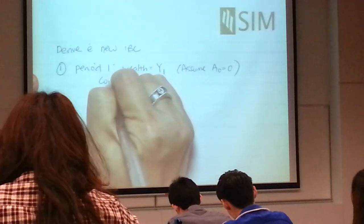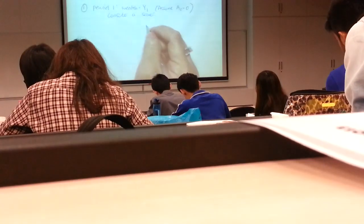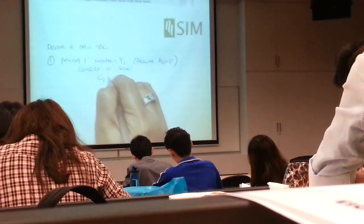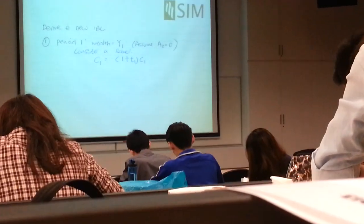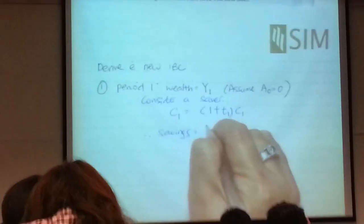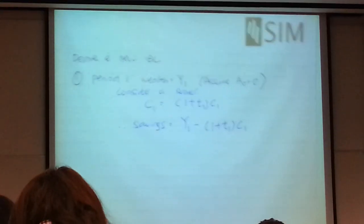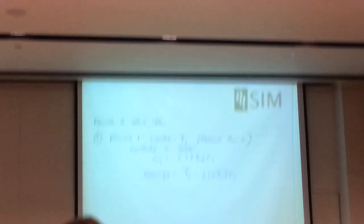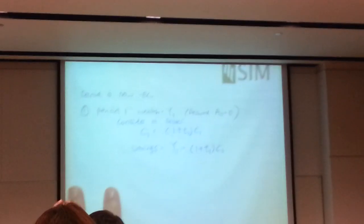You start off with only an income that you earn, Y1, that's all. And we consider a saver. So that tells you how much would that person save. So in this case, if it's a saver, consumption C1 was, first of all, 1 plus T1, C1. This is already given in the question because you have to pay tax. Therefore, savings would be Y1 minus C1.